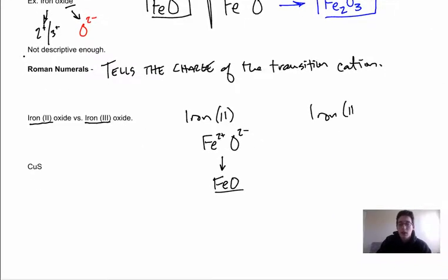Iron(III), on the other hand, tells me I have a 3+ iron and I have a 2- oxygen. We have to do a flip and switch, and that gives us our Fe2O3. So this again shows us the charge of the transition metal, the charge of the cation.